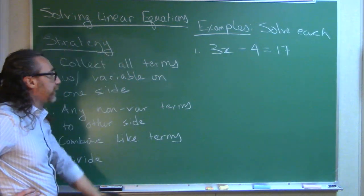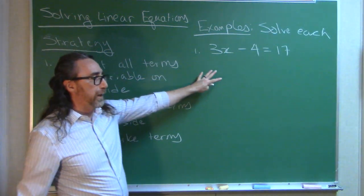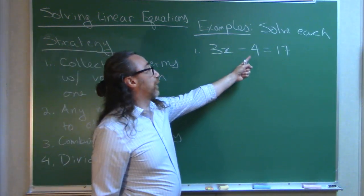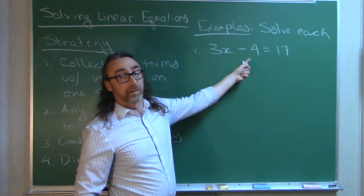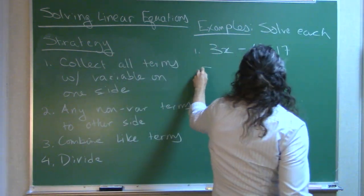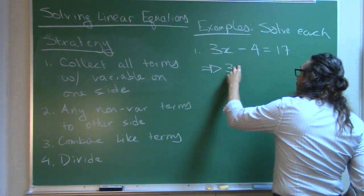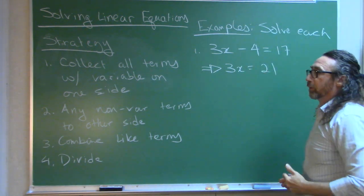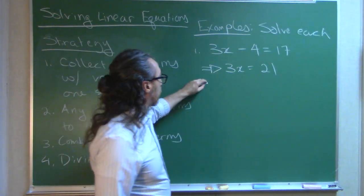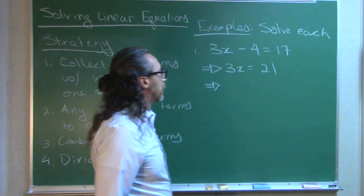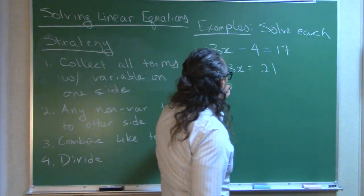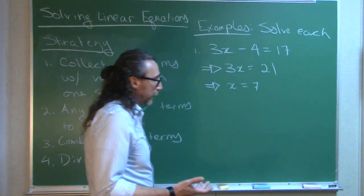Following this strategy, I want everything with the variable on one side, everything without the variable on the other side. This term does not have the variable, so I want that to go to the other side. How do I get rid of a minus 4? I add 4 to both sides. So if that equation is true, then this equation is true: 3x equals 21. And now I want to know what x needs to be — I know what 3x is, so I divide by 3 and get x equals 7.